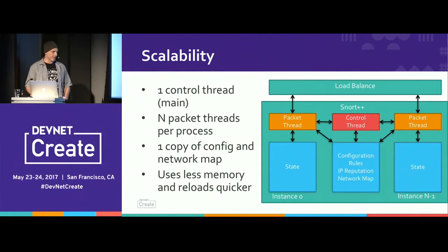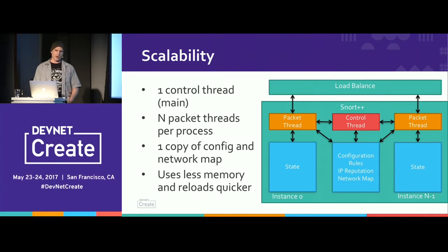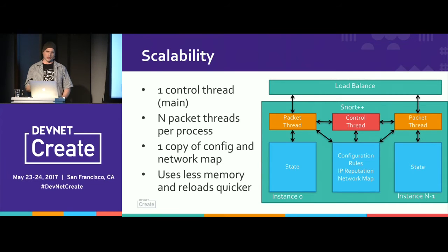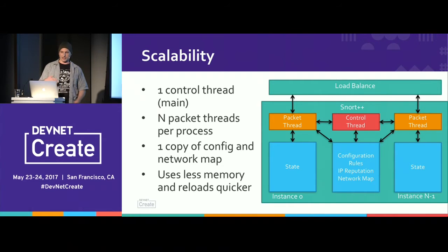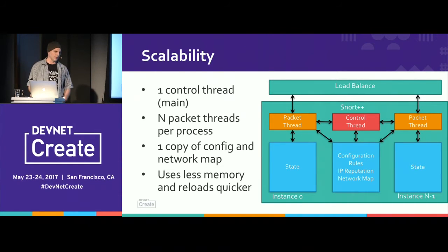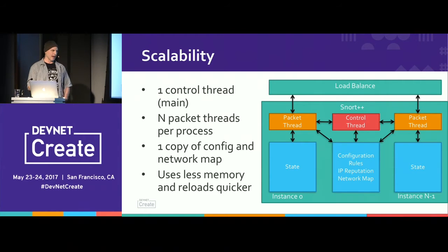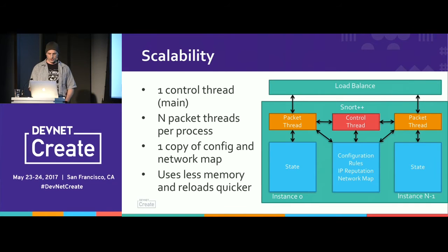Starting with scalability: with vanilla Snort 2.x, there is one packet thread and multiple control threads. With Snort++, we've turned that around — we have multiple packet threads and one control thread. All of the packet threads share the configuration, share the fast pattern search engines, and share the network map. That means it scales better because it doesn't take as much memory, leaving more memory for state. For example, on a 24-core system you'd have to run 24 vanilla Snorts and reload the config 24 times. With Snort++, you just reload the one config — once.